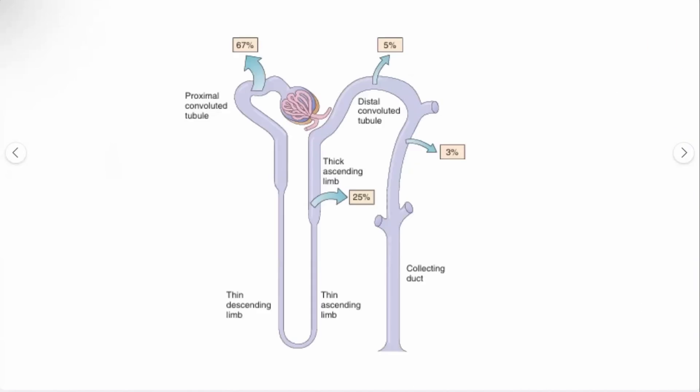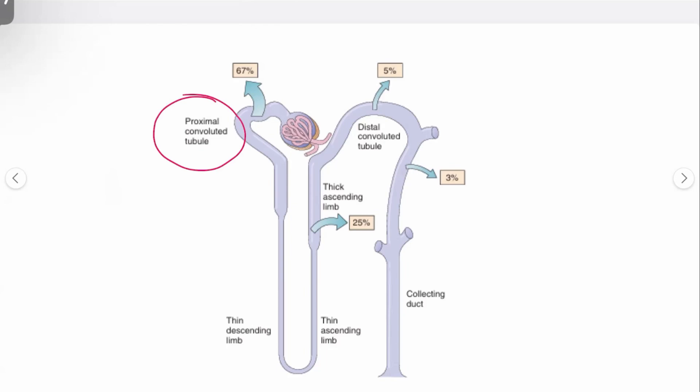First, we need to understand the normal mechanism of the nephron. Your kidney consists of more than 1 million nephrons in each kidney. Each kidney functions to excrete waste produced in our body and ensures electrolytes are normally reabsorbed, while some are secreted.